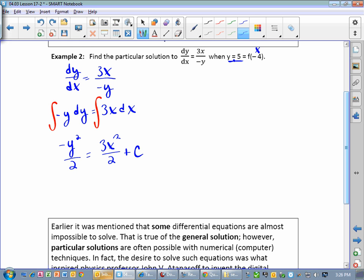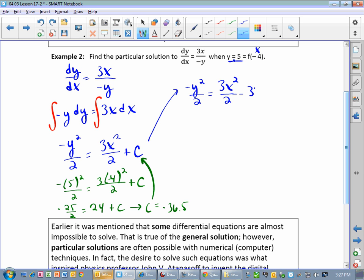We take this c value that we got and we plug it right back in up here at the place we were right before we plugged in. And so that becomes our new equation. Negative y squared over 2 equals 3x squared over 2 minus 36.5.